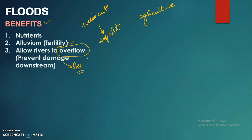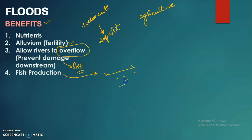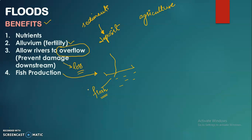Another benefit is increased fish production. When floods bring fresh water to coastal areas, those coastal zones — which serve as breeding grounds for fish — receive fresh water. This makes those coastal areas highly productive for fish, benefiting the fishing industry.